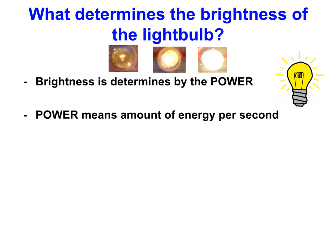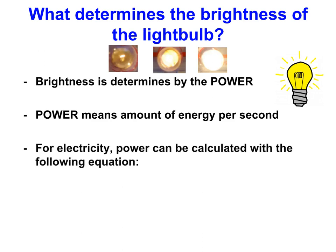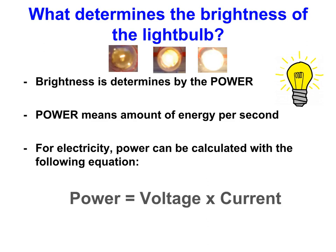You've probably felt how warm those light bulbs become. So power is really nothing more than the amount of energy per second that is being absorbed by your light bulb. For electricity the power can be calculated as energy per second. So power equals voltage times current, and the unit for power is watts. We can write this as: Power (in watts) = V times I. Remember that equation because we will use it a lot.